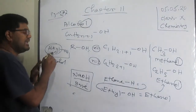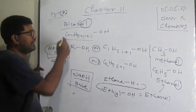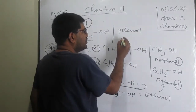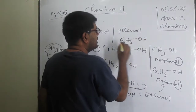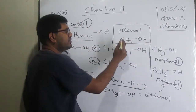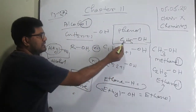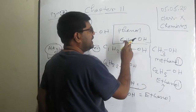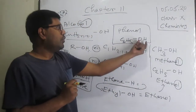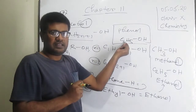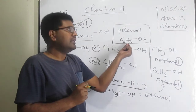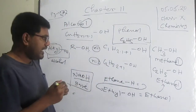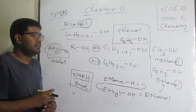Any compound ending in '-ol' will be an alcohol. In our book it is written that phenol is not an alcohol, because phenol's formula is C6H5OH — C6H5 is not an alkyl formula. When OH is attached directly with an aryl ring (like C6H5), that is phenol, which is acidic — a totally different thing from alcohol.